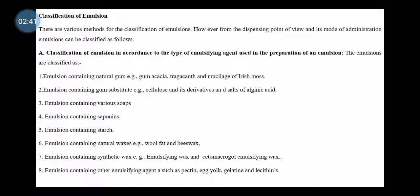Third, emulsions containing various soaps — divalent soap, monovalent soap, or trivalent soap. On that basis we can classify the emulsion. Then, emulsions containing saponin. Next, emulsions containing starch — starch is one of the emulsifying agents used in preparation of emulsions that reduces interfacial tension and produces a coarse emulsion.